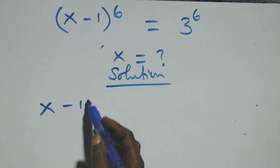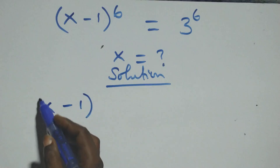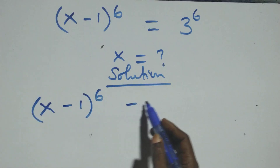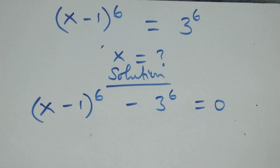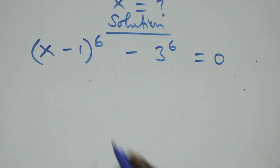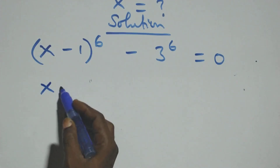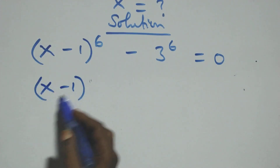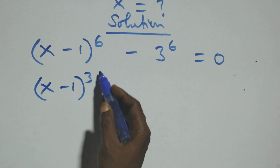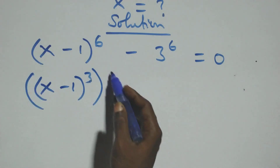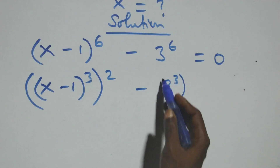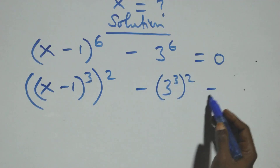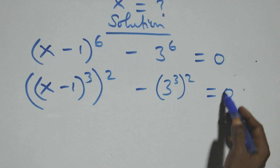At this point we have x minus 1, raised to the power 6, minus 3 raised to the power 6, equals to 0. The next step: we write this as x minus 1, raised to the power 3, then raised to the power 2, minus 3 raised to the power 3, raised to the power 2, equals to 0.